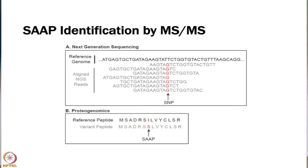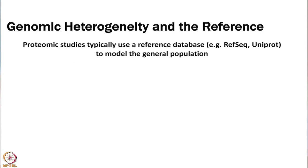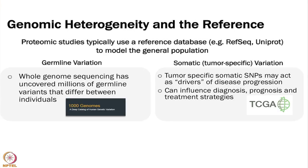We are really going to focus on how we get these peptides into our database so we can actually find them. Most proteomic studies, especially previously, used a reference database — either RefSeq or UniProt — to model whomever. But as we talked about yesterday, a reference database is just trying to represent the population; it does not have all of the different variation that occurs. The thousand genomes project really uncovered how much variation there is person to person, and these are not necessarily disease-causing SNPs — they just exist.